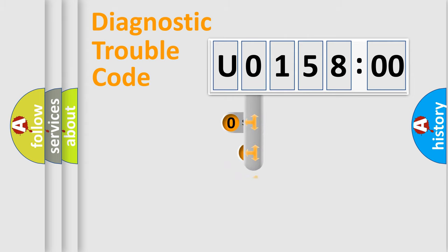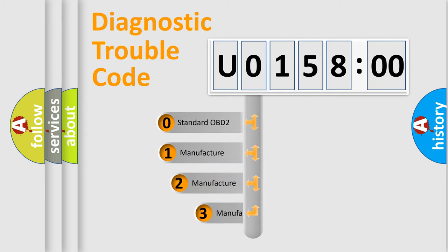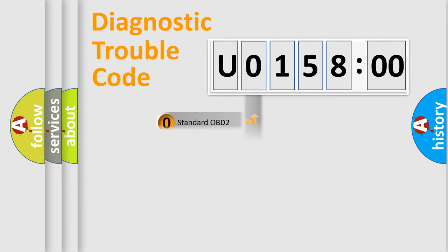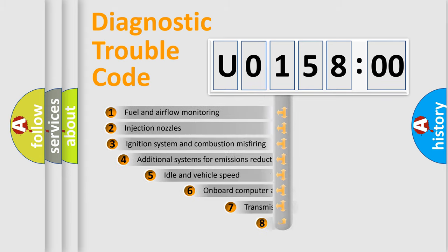This distribution is defined in the first character code. If the second character is expressed as 0, it is a standardized error. In the case of numbers 1, 2, or 3, it is a manufacturer-specific error.